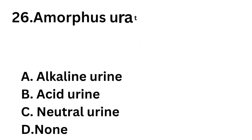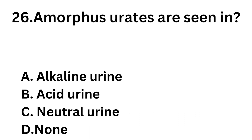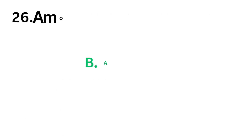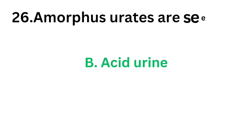Question number 26: Amorphous urates are seen in which type of urine? Option A: Alkaline urine. Option B: Acid urine. Option C: Neutral urine. Option D: None. The correct answer is Option B: Acid urine. Amorphous urates are seen in acid (acidic) urine.